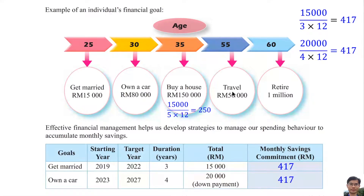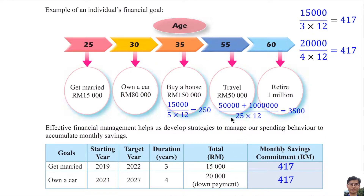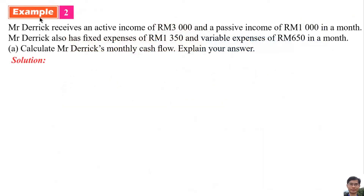He needs to save about 250 ringgit per month for the house down payment. He also needs to save money for travel and retirement, planning to save about 1,050,000 ringgit in 25 years, so he needs to save about 3,500 ringgit per month. If he and his wife carry out their financial plans regularly and spend money wisely, they will eventually achieve all their financial goals.